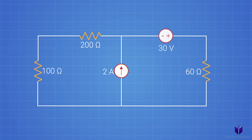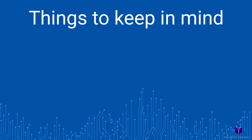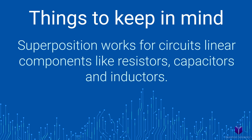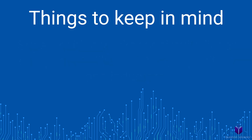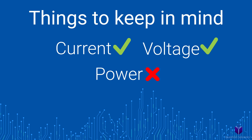Then we would put the voltage source back and ignore the current source by having an open circuit, and calculate the values for our unknowns. Once we get both values, all we do is add them together and we get the true values. There are some things to keep in mind when using the superposition method. Superposition works for circuits with passive elements like resistors, because they're linear. Also, you can only find the current and voltage, not power using superposition, because power dissipation is a non-linear function.